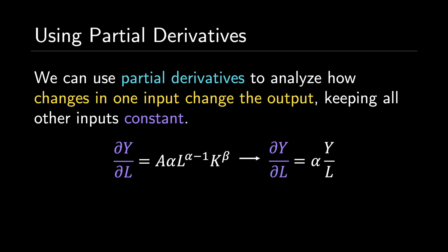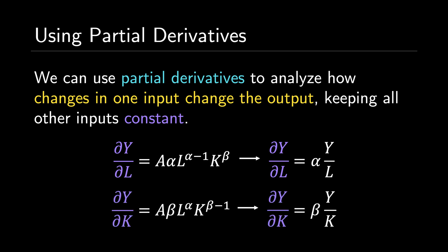Likewise, we can take the partial derivative of Y with respect to K, yielding: the partial of Y with respect to K is equal to A times beta times L to the alpha times K to the beta minus 1. Recalling that Y equals A times L to the alpha times K to the beta, we can rewrite this as: the partial of Y with respect to K is equal to beta times Y over K. This tells us that the rate of change of production with respect to capital equals the output elasticity of capital times total production divided by capital.